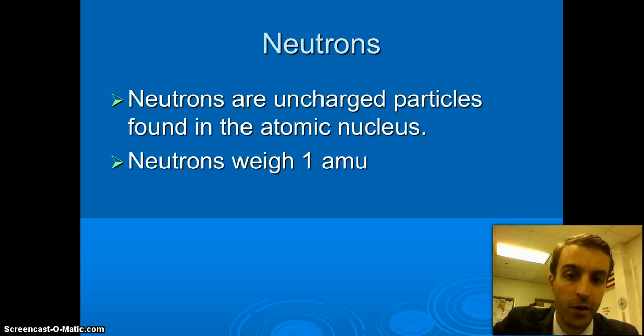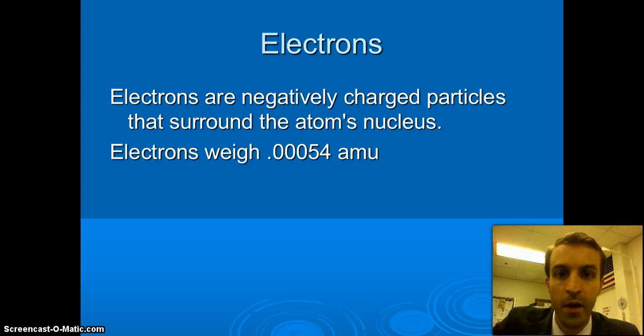Neutrons are uncharged. They are neutral. They are zero. They have no charge at all and they are also found in the nucleus. They also weigh one amu. And finally, your electrons are the negatively charged particles that surround the atom's nucleus and they weigh .00054 atomic mass units which means that they are very, very, very small.